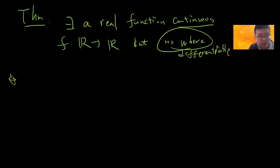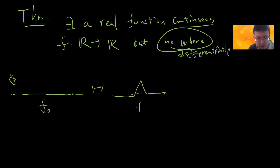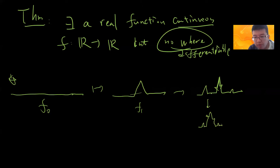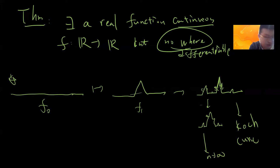You start from a zero step, then a first step, then a second step, and each function in the next step gets something very strange and fractal — I remember it's called a curve or something. You can prove that when n goes to infinity, this function is continuous but not differentiable. Let's give a formal construction. Define φ(x) to be the absolute value of x on [−1, 1], and extend φ to all real numbers by making it periodic with period 2.